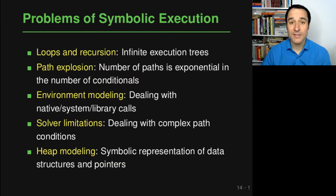So here's a list of five problems with classical symbolic execution which I will briefly explain now and then we will go through them one by one. Problem number one is about loops and recursion because if you think about this execution tree and if you try to draw this tree for a program that has a loop, you'll quickly find out that this is an infinite execution tree.